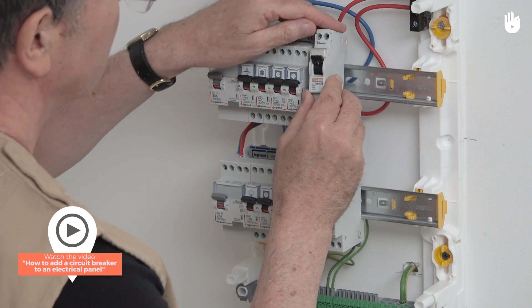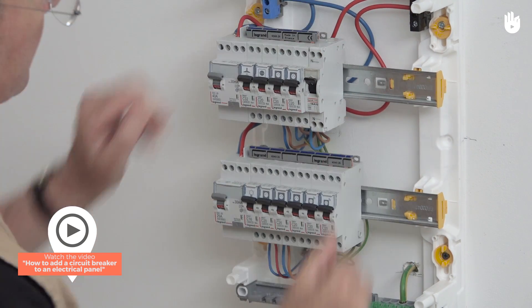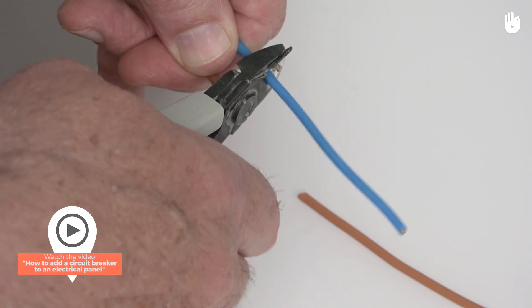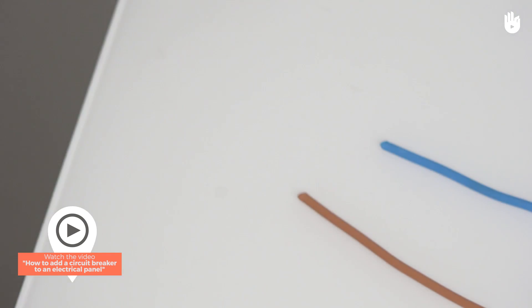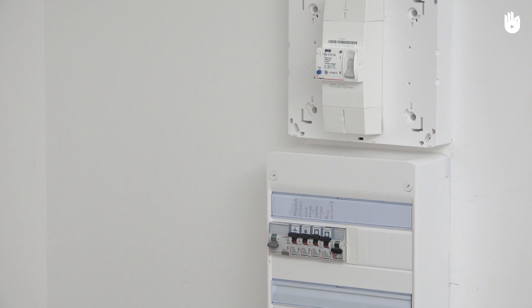To learn more about main and individual circuit breakers, please watch the video How to add a circuit breaker to an electrical panel. Before doing this project, turn off the electrical supply at the mains and the subscriber circuit breaker.